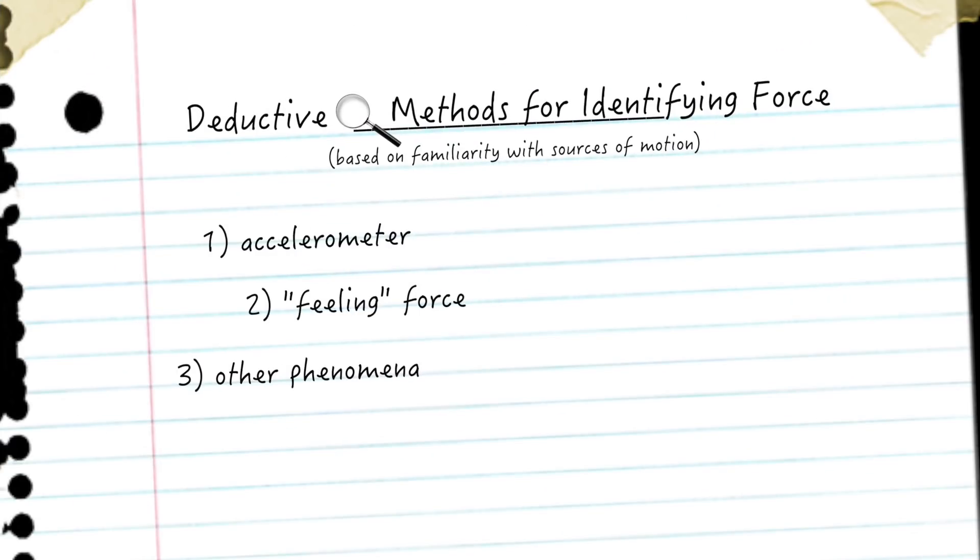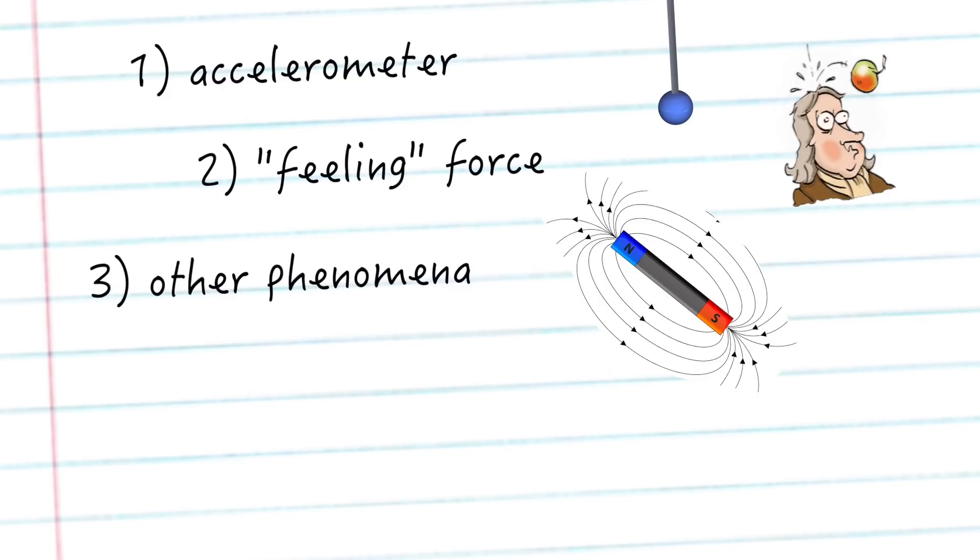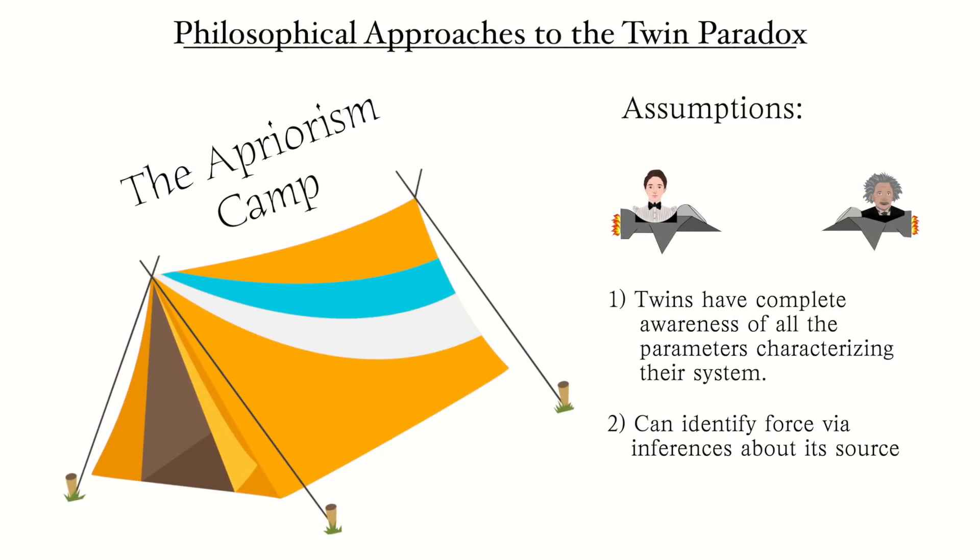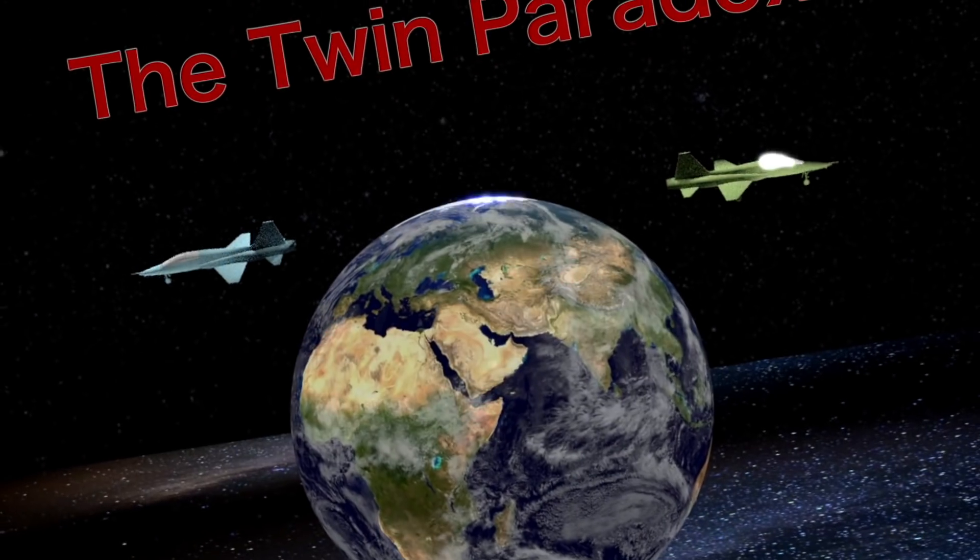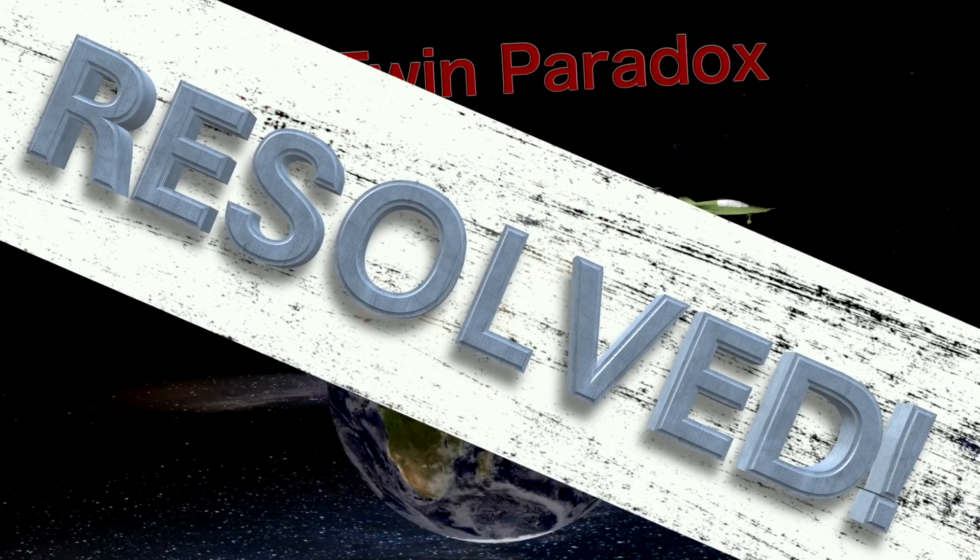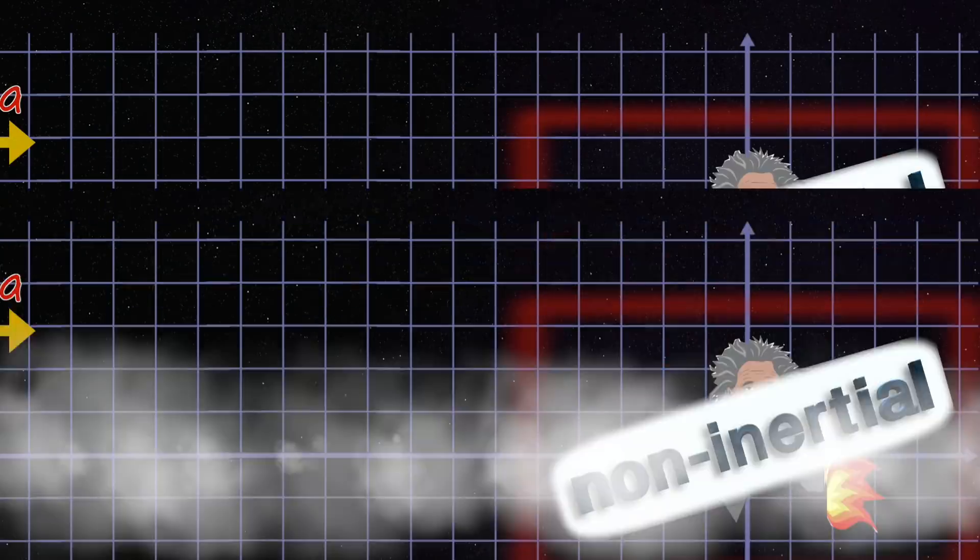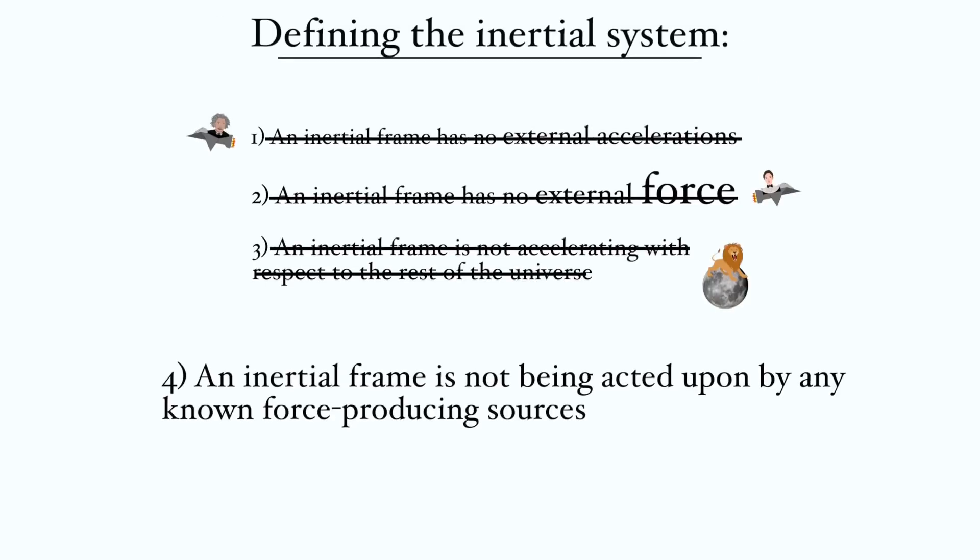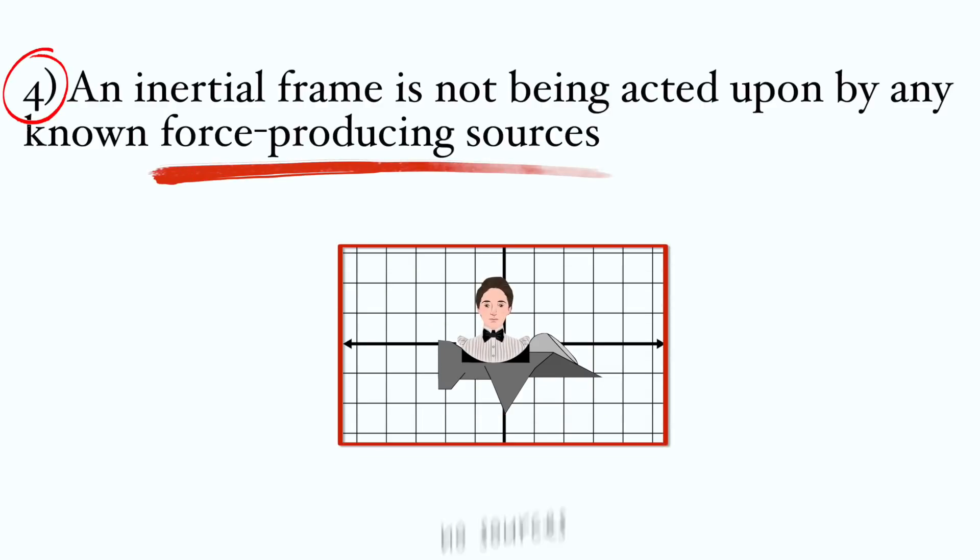He could also make such a deduction by using an accelerometer, by a haptic feeling of force through his nervous system, or by noting some other phenomenon whose behavior he is readily familiar with. People who belong to this camp do not find such assumptions about the twins' knowledge to be problematic, and so for them, this is the end of the story. The paradox resolves itself here, with the materialization of force furnishing the requisite asymmetry needed to distinguish the twins' experiences. Their definition of an inertial frame, meanwhile, becomes implicitly characterized by an absence of any known force-producing sources that could be acting on the system.